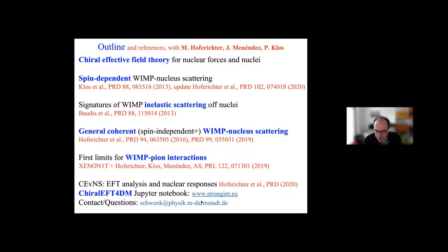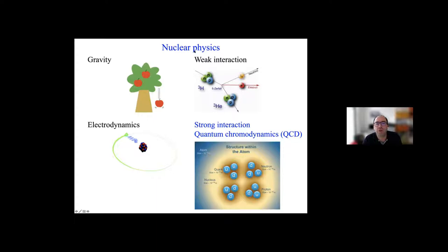Let me start with the first topic: a quick introduction to modern nuclear physics, which I think is important because you will have to rely on nuclear physics for some aspects of dark matter direct detection. Nuclear physics concerns primarily the strong interaction, one of the four fundamental interactions of nature, governed by QCD — the theory of quarks and gluons — which binds quarks and gluons into hadrons like neutrons and protons, and they themselves bind to form nuclei.